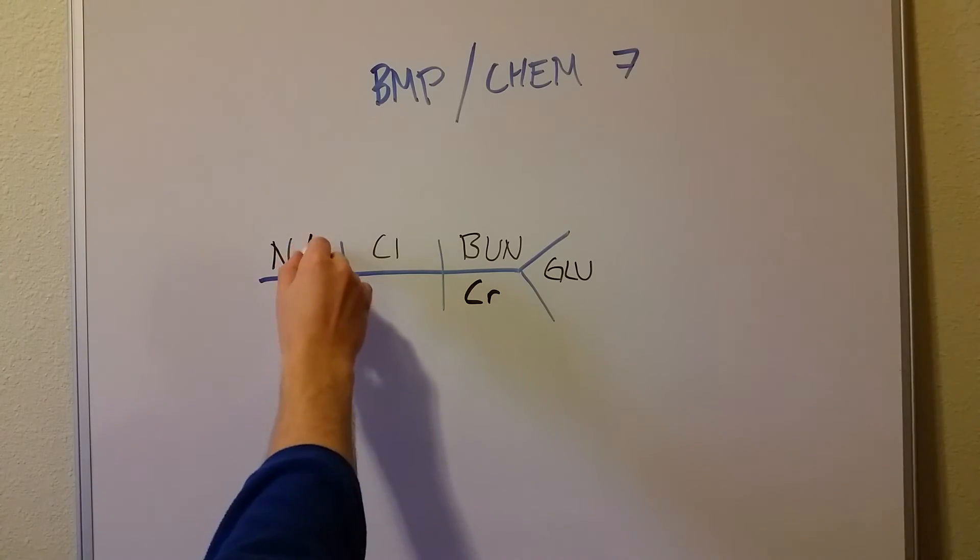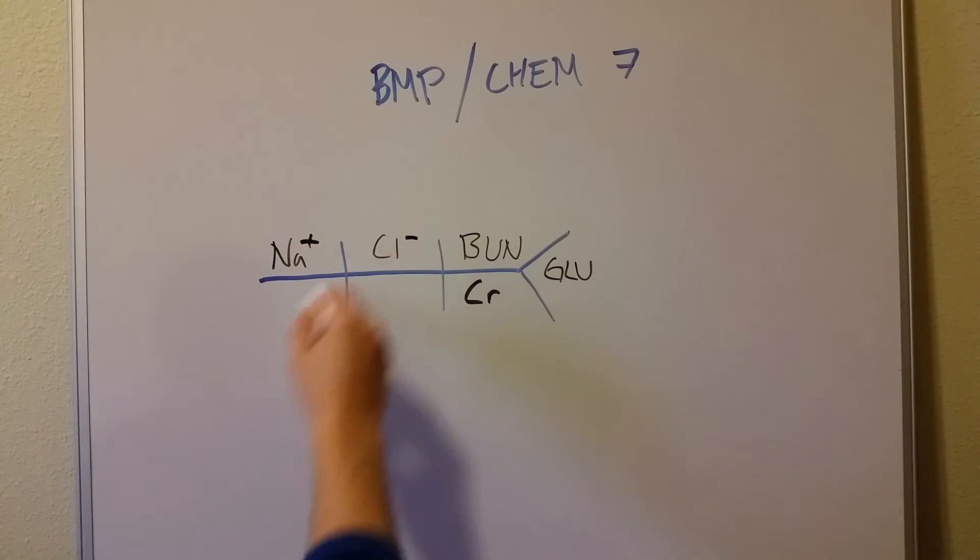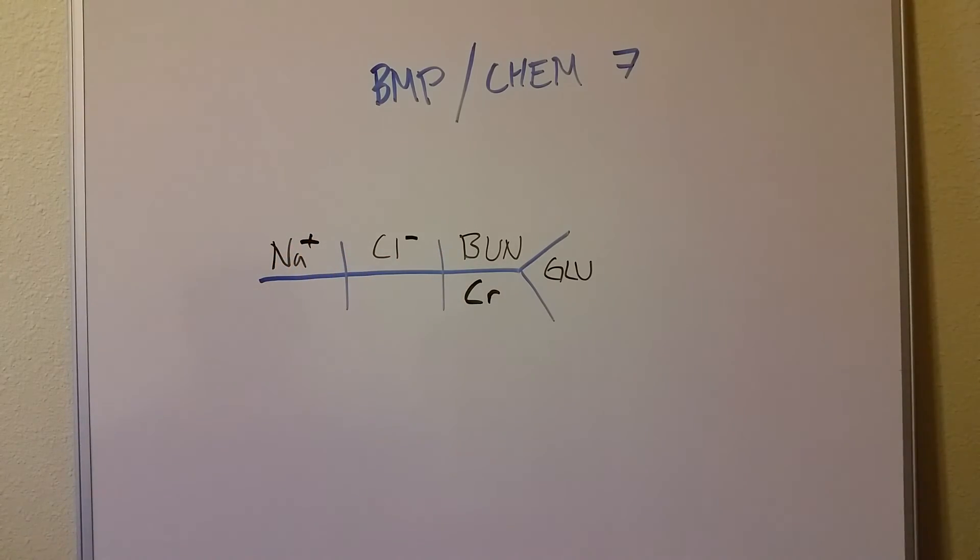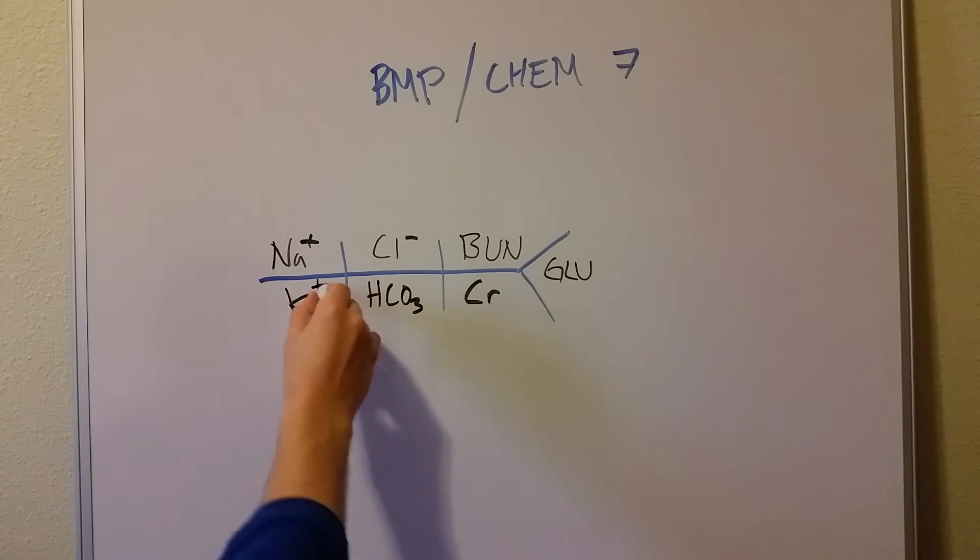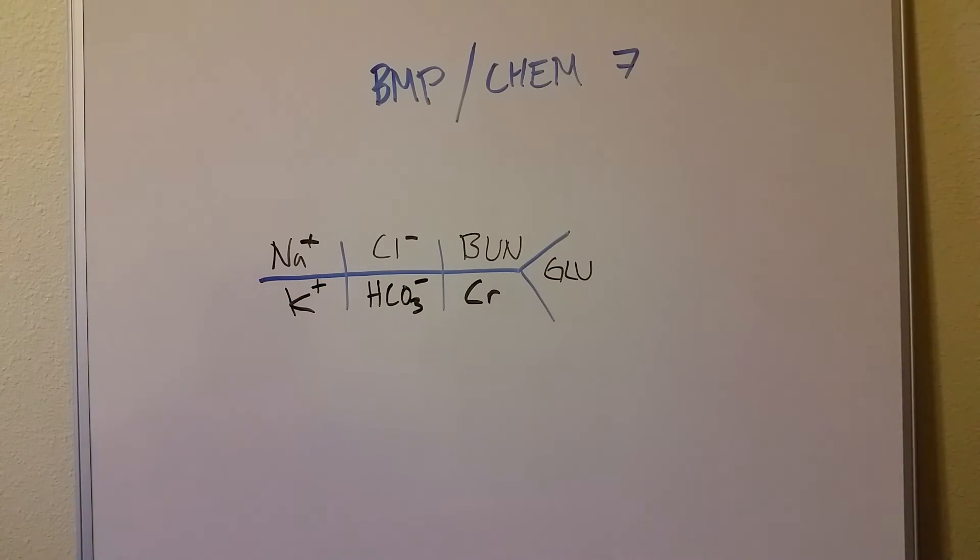And then I just think back, sodium is positive, chloride is negative, and the two things that we're missing here in our basic metabolic panel are potassium and bicarb. Because potassium is positive and bicarb is negative. So there you go. That's how you remember it.